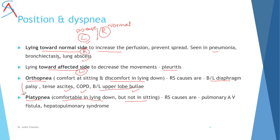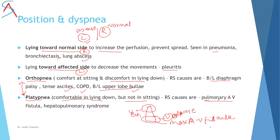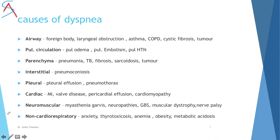In platypnea, when the person stands, the apex of the lung has better ventilation but the base has maximum volume and maximum AV fistulas. In pulmonary AV fistula, lying down eliminates gravity-dependent perfusion at the AV fistulas. Similarly, in hepatopulmonary syndrome, vasodilation opens existing pulmonary AV fistulas at the lung base, causing dyspnea on sitting.